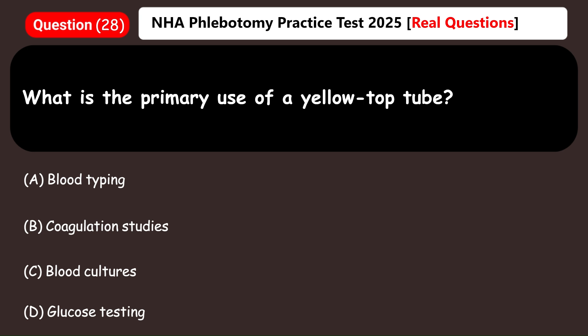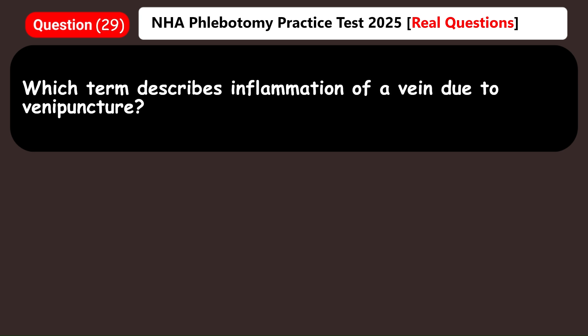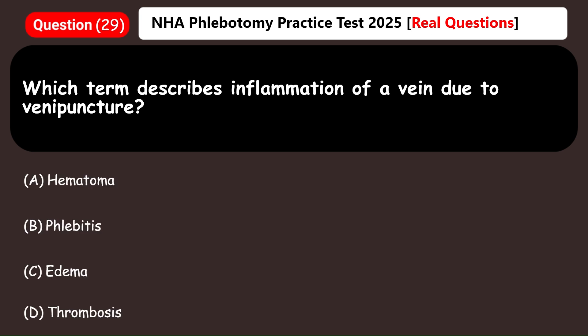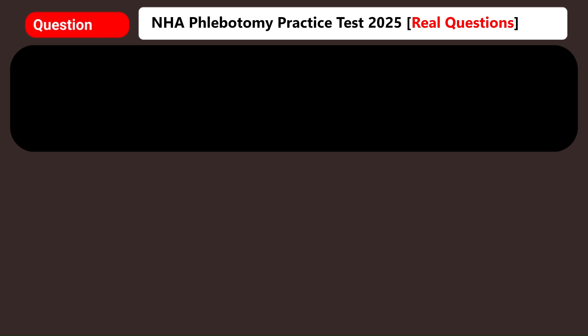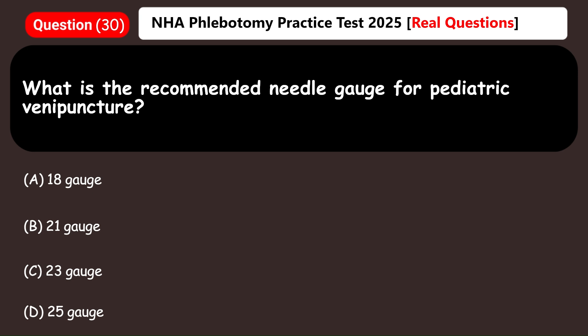What is the primary use of a yellow top tube? A) Blood typing, B) Coagulation studies, C) Blood cultures, D) Glucose testing. Answer: C) Blood cultures. Which term describes inflammation of a vein due to venipuncture? A) Hematoma, B) Phlebitis, C) Edema, D) Thrombosis. Answer: B) Phlebitis. What is the recommended needle gauge for pediatric venipuncture? A) 18 gauge, B) 21 gauge, C) 23 gauge, D) 25 gauge. Answer: C) 23 gauge.